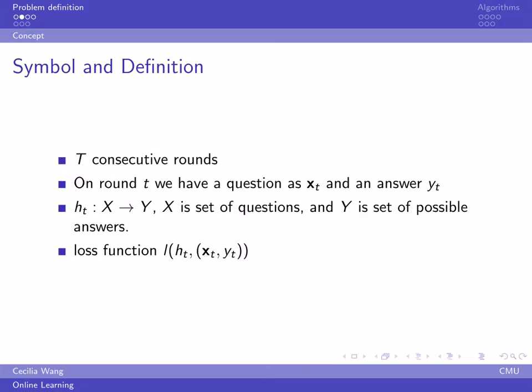We see the whole process as consecutive runs. In each run we are given a question as a feature vector. We make predictions according to a hypothesis of this run. Now we see a feedback answer and calculate loss according to a loss function.